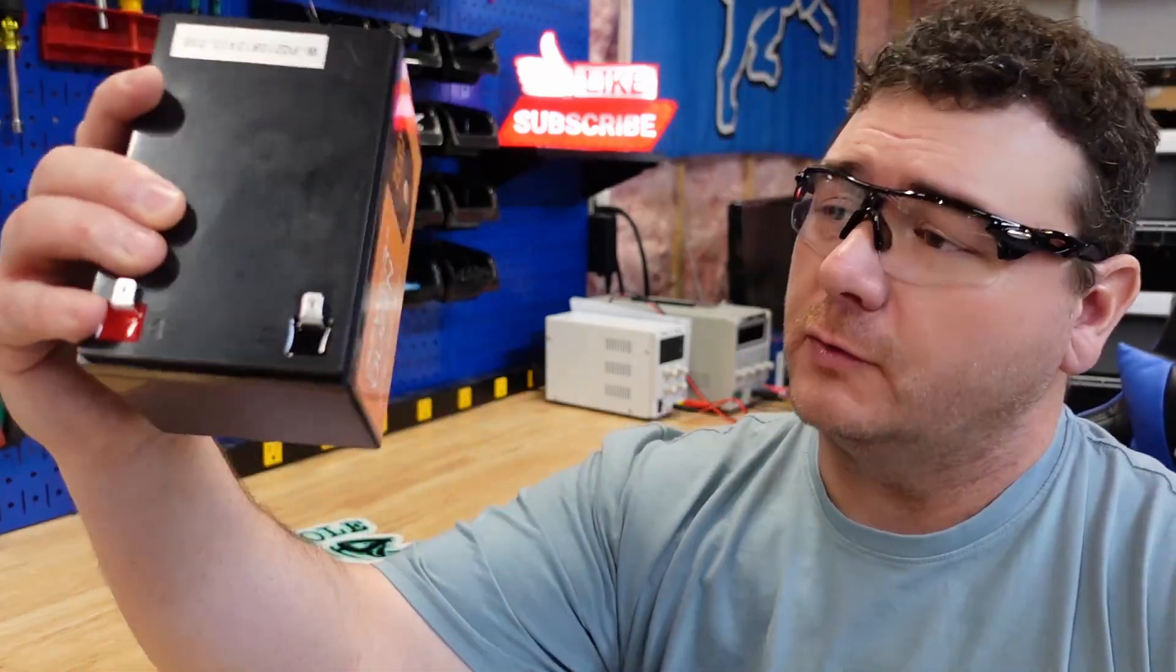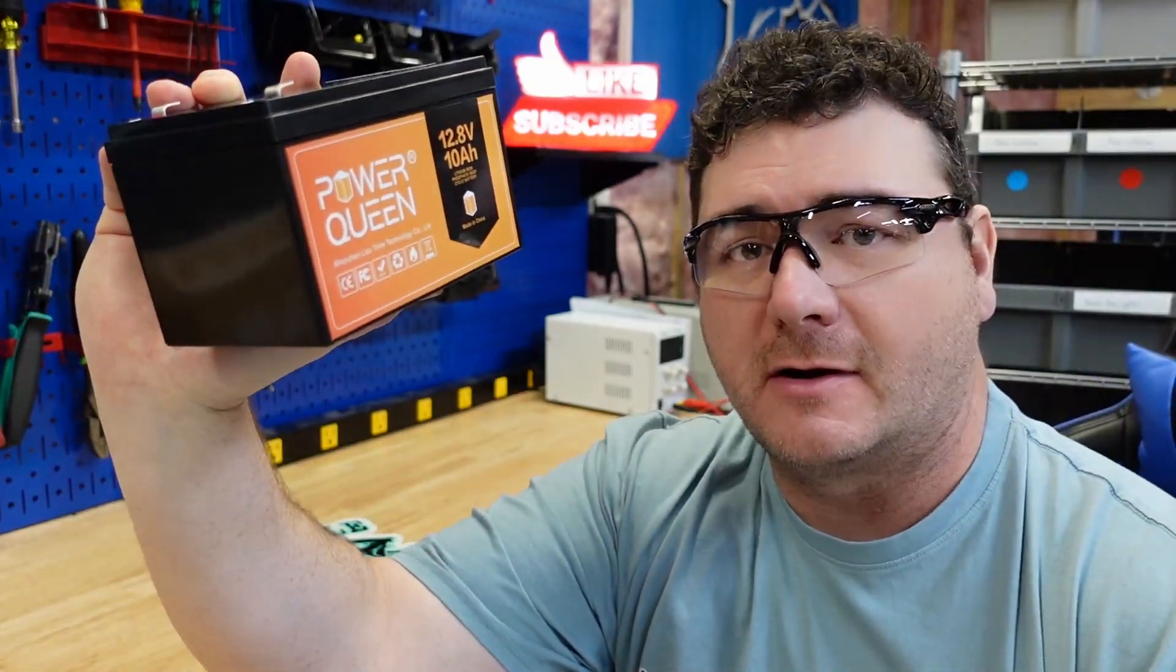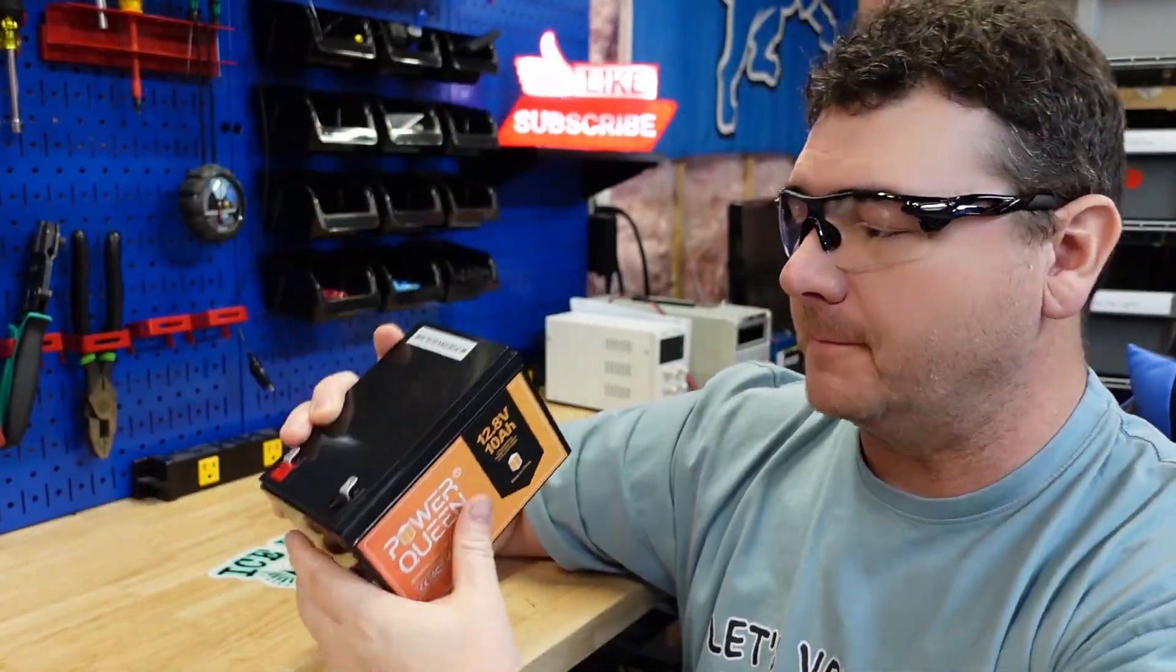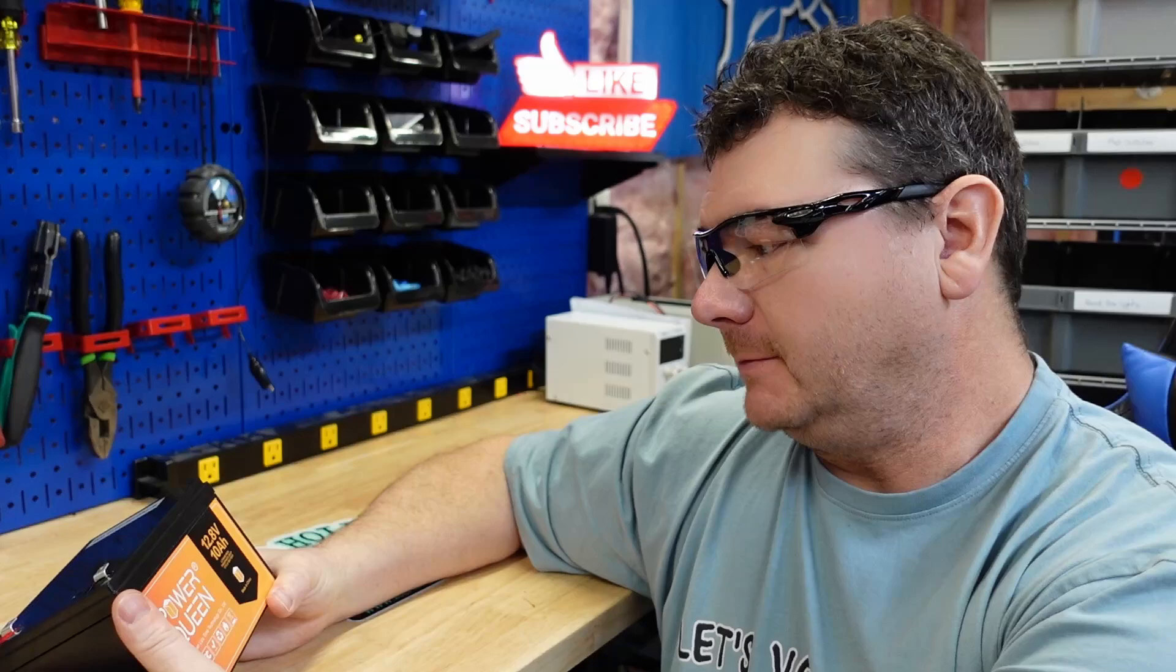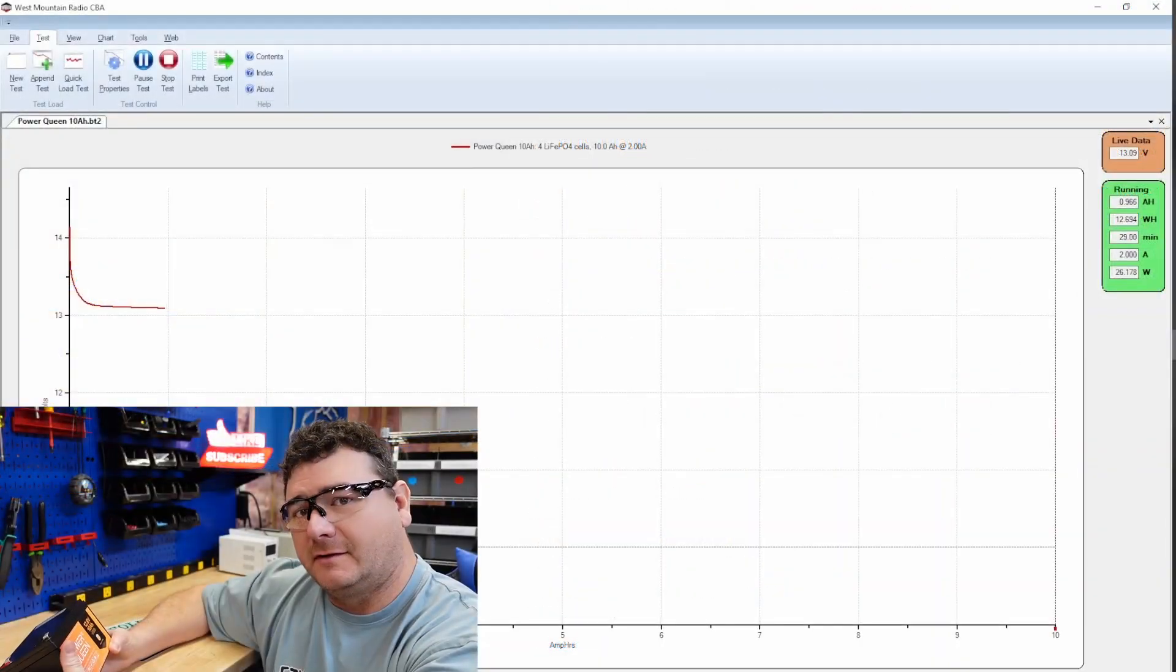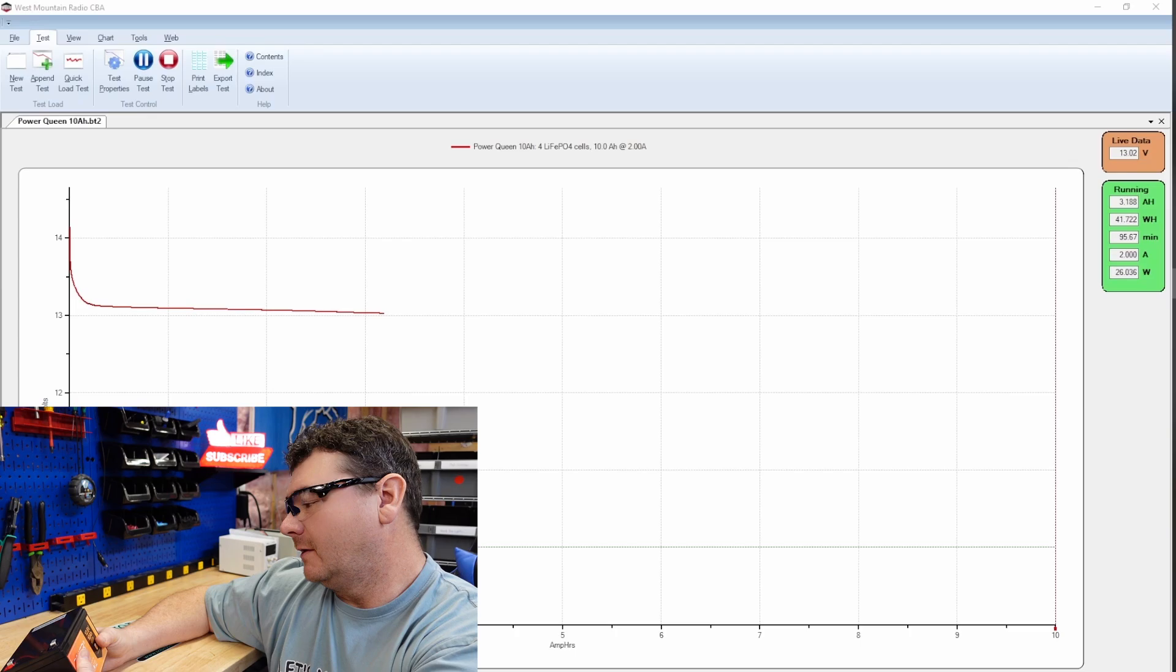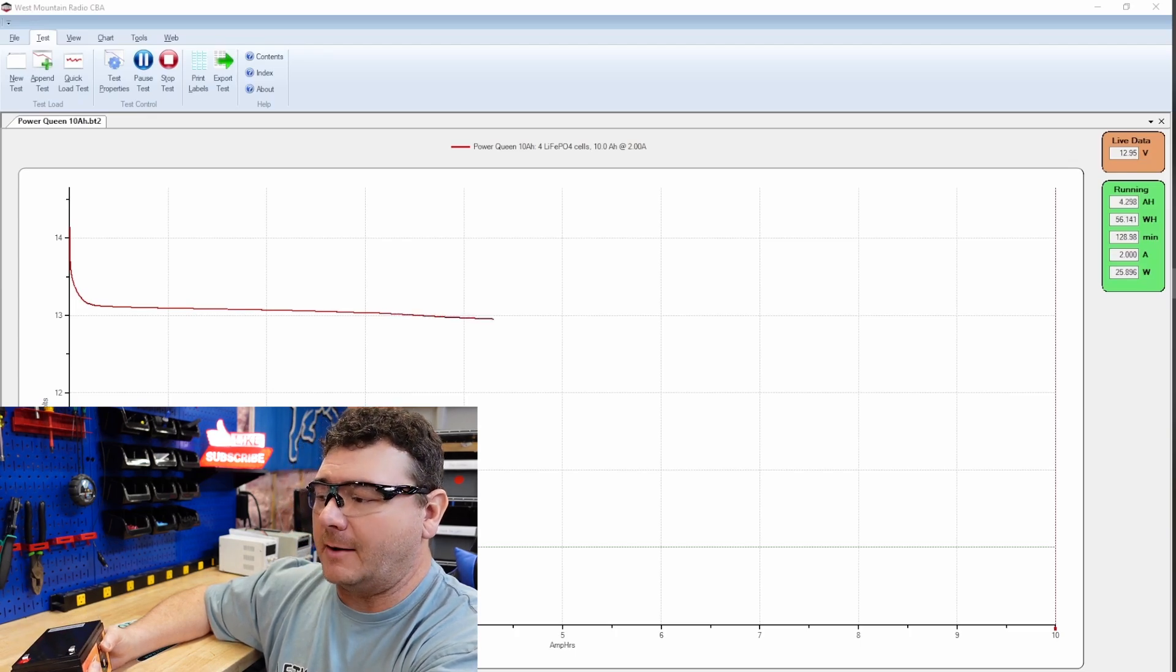In today's video we are going to review and tear down the Power Queen 10 amp hour lithium iron phosphate battery. This battery is that cheap battery I found on Amazon for like 55 bucks for a 10 amp hour battery. That's pretty darn good, comes out to about five dollars and 50 cents an amp hour, very affordable battery.